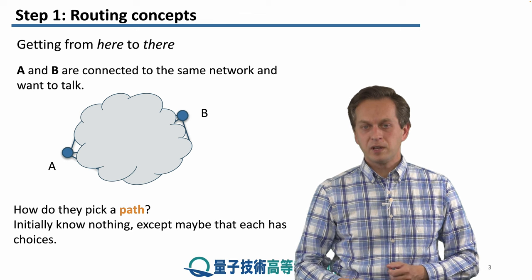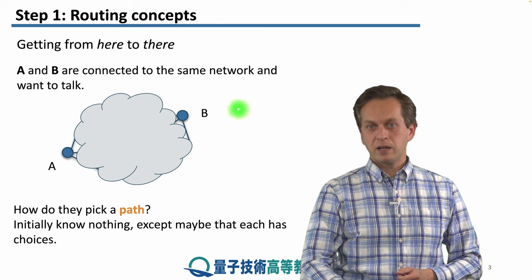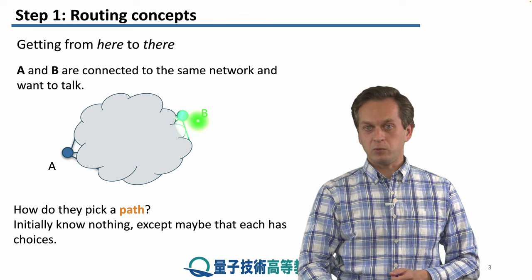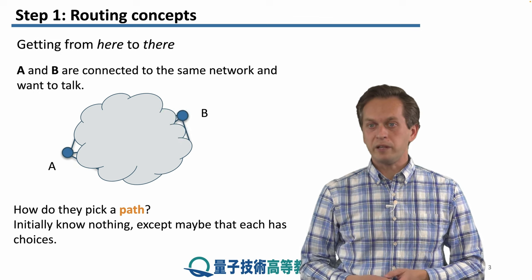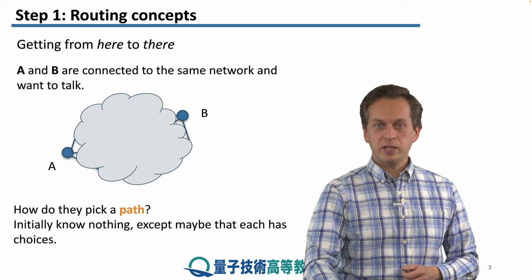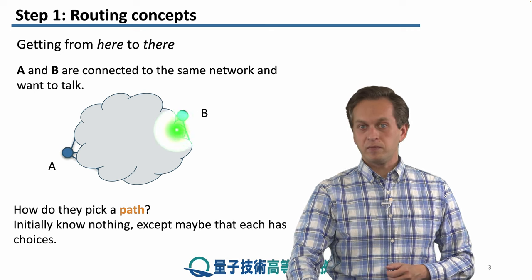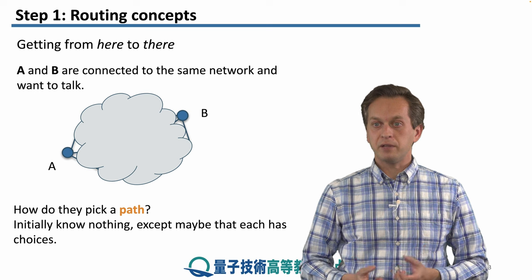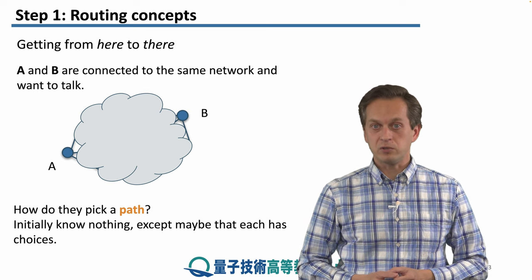So what is routing? Imagine that we have some network and two nodes that are part of the network, A and B, and they wish to communicate. Maybe A wants to send some information to B. Routing is all about how do we get from A to B? How do we pick a path that connects these two nodes of the network?